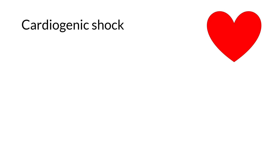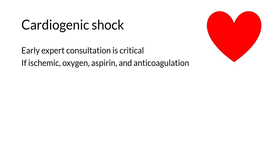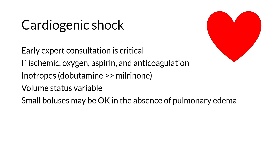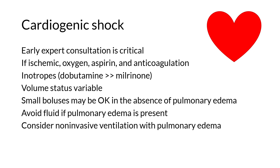Cardiogenic shock is tricky, and early expert consultation is critical. If there is evidence of myocardial ischemia by ECG or troponin, oxygen, aspirin, and anticoagulation should be started. Patients in decompensated chronic heart failure are almost always volume overloaded. Because cardiogenic shock is a condition of decreased contractility, inotropes have a role early in its management. Volume status is variable in patients with cardiogenic shock due to acute myocardial infarction — small boluses may be okay in the absence of pulmonary edema, but if the patient has pulmonary edema, fluid should be avoided. Consider the use of non-invasive ventilation with pulmonary edema, as it has been shown to improve mortality.